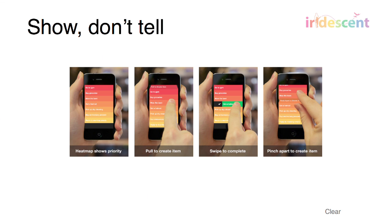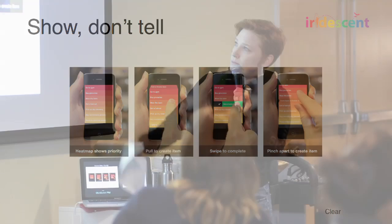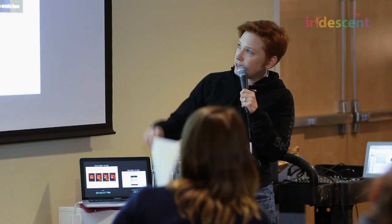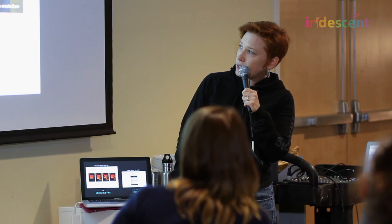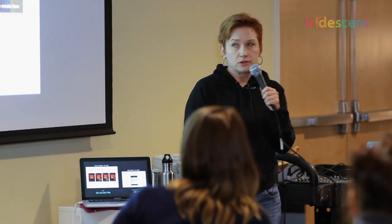Show, don't tell — this is especially true for smartphones. It's a really beautiful thing that we can now design interfaces that you don't have to explain. You can let the interface show people what they need to do next. There's a pretty new app called Clear — it's just a simple to-do list. It uses color to show priority, lets you pull to create an item, swipe to complete an item, and pinch to add something in between. That's basically it — very straightforward.